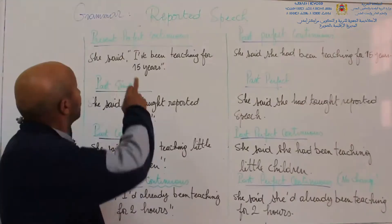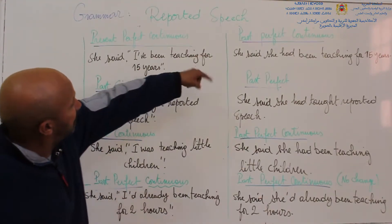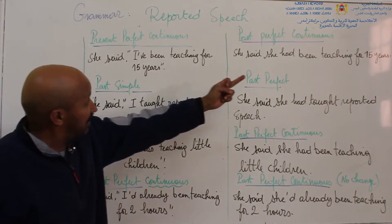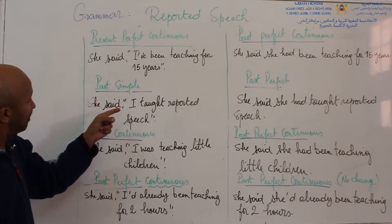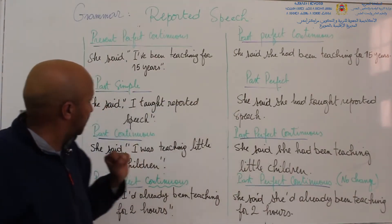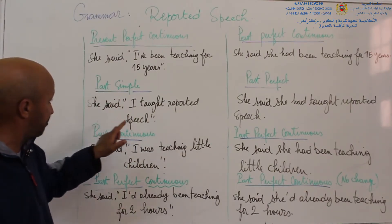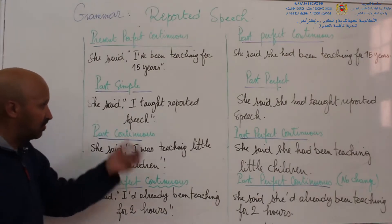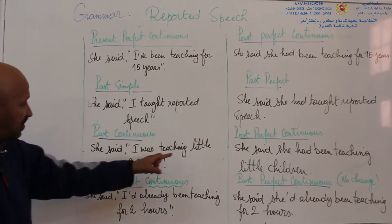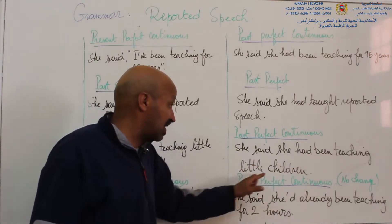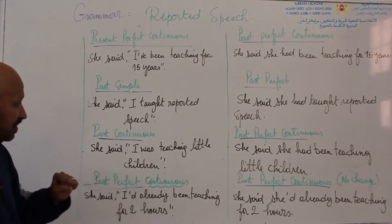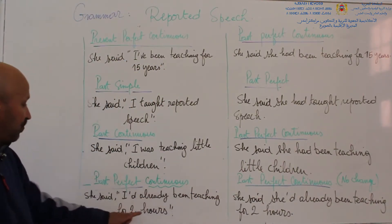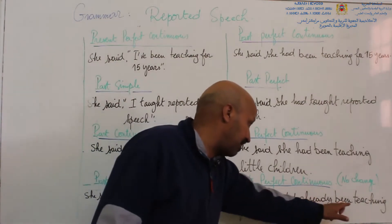Present perfect changes to past perfect — she said she had been a teacher since 2007. Present perfect continuous changes to past perfect continuous — she said she had been teaching for 15 years. Past simple changes to past perfect — she said she had been teaching little children. Notice that past perfect has no change; it remains the same. For example, she said she had already been teaching for two hours.